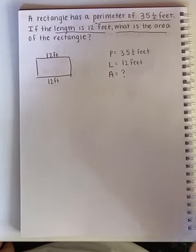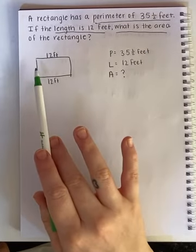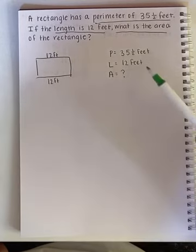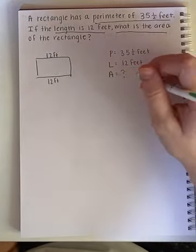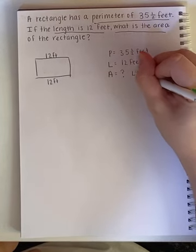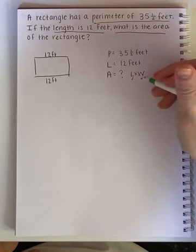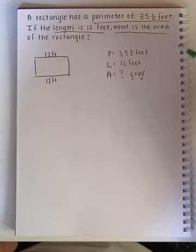Alright, now I need to figure out how I can solve for these sides because my end goal is to find the area, and to find the area you need to multiply length times width. I already have the length. I don't have the width yet so I need to find out what that is.